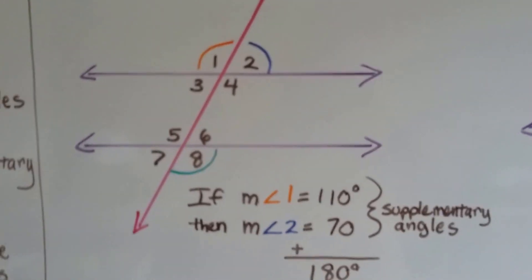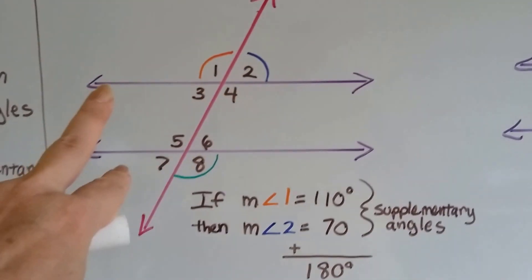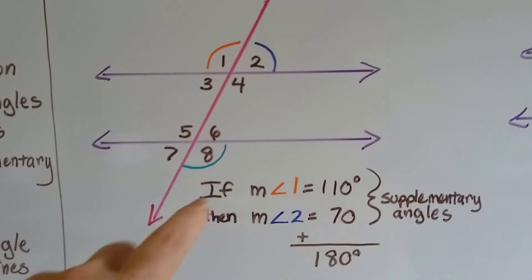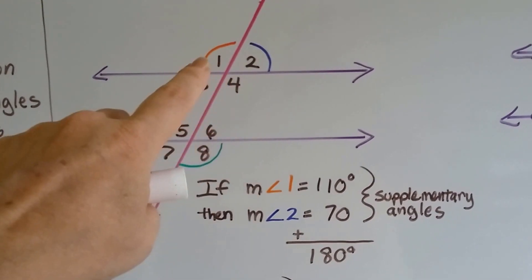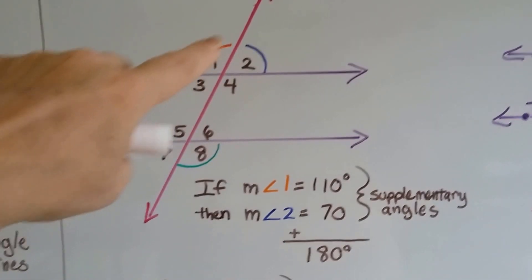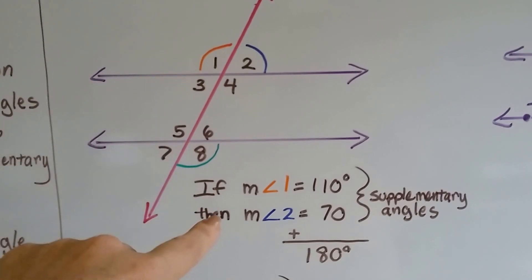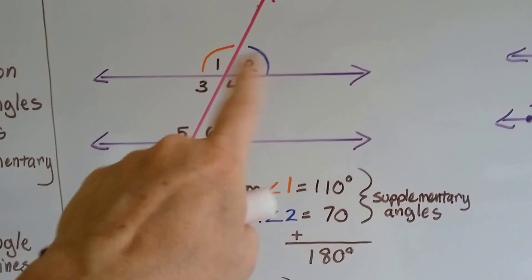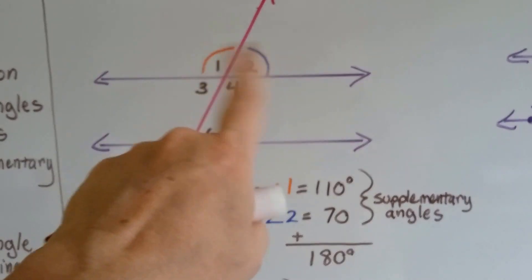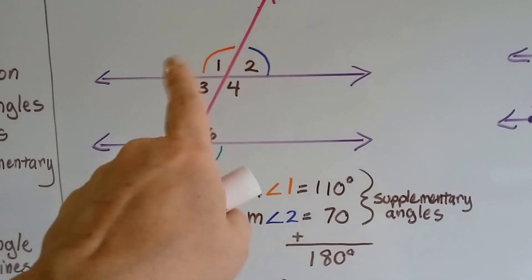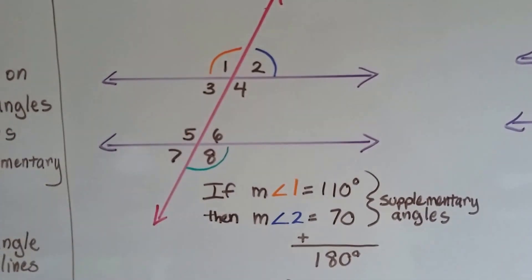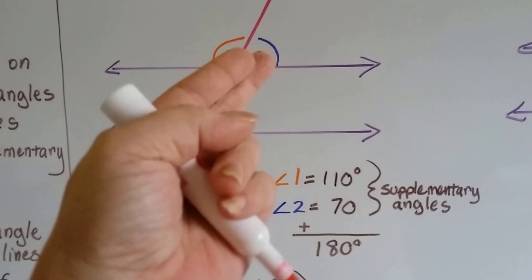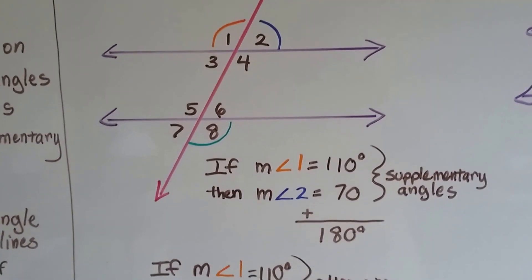We've got a set of parallel lines and a transversal cutting through it. If the measure of angle one — this orange one right here — is 110 degrees, then the measure of angle two has to be 70 degrees, because they have to total 180 degrees together. They're supplementary angles; they're side by side. So we know the measure of angle two has to be 70 degrees.